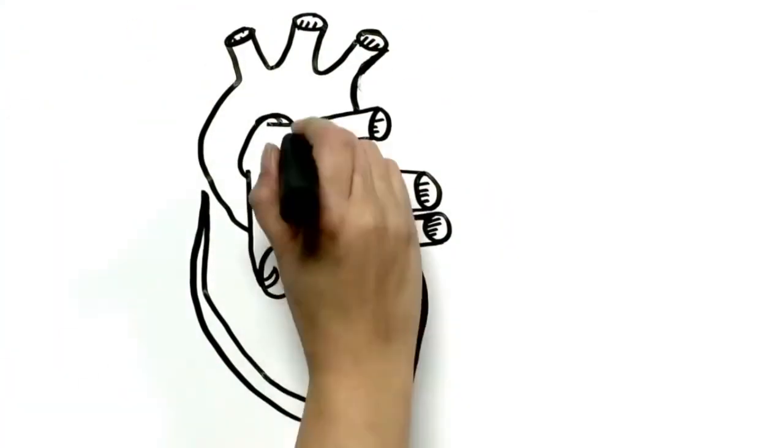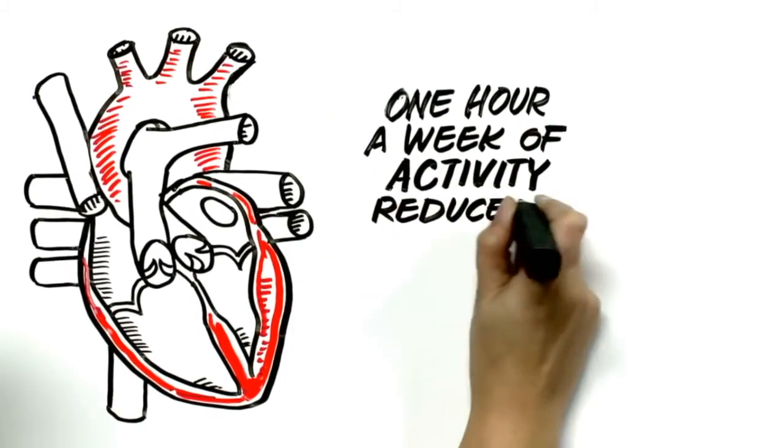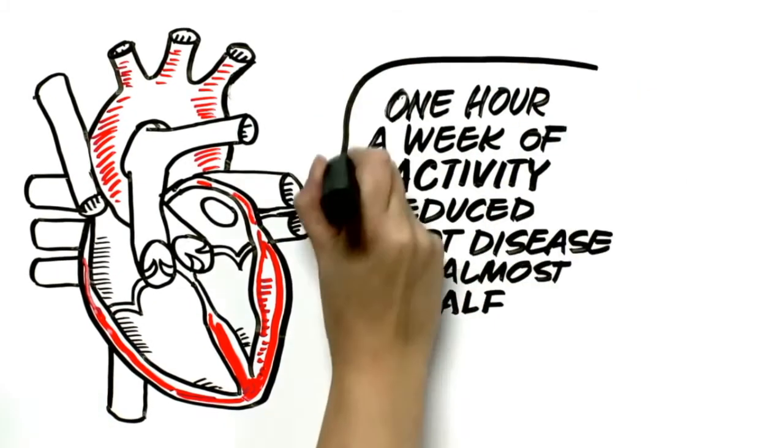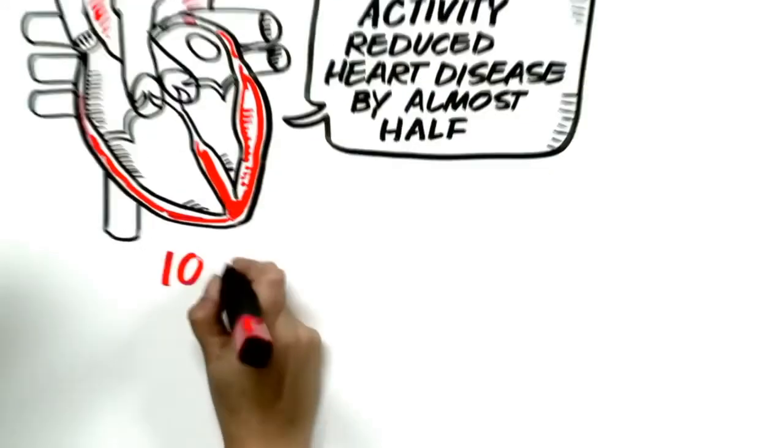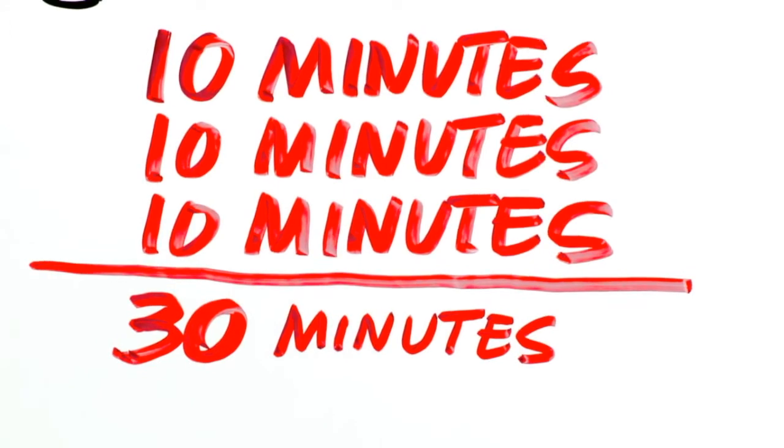If we took the nurses health study, women who went from zero activity to just one hour a week reduced their heart disease rates by almost half. You can break it down so it can be 10 minutes, 10 minutes, 10 minutes if you want to do 30 minutes of exercise, so it can be broken into three.